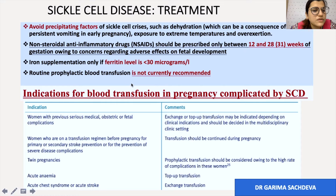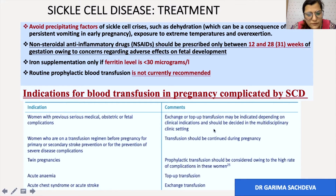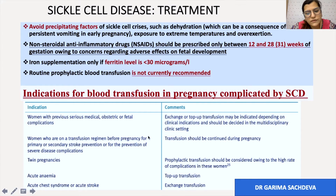Routine prophylactic blood transfusion is not currently recommended. Indications for blood transfusion in sickle cell disease during pregnancy include: previous serious medical, obstetric, or fetal complications; if the woman was already on a transfusion regimen; twin pregnancy (prophylactic transfusion); acute anaemia (top-up transfusion); and acute chest syndrome or acute stroke (exchange transfusion).